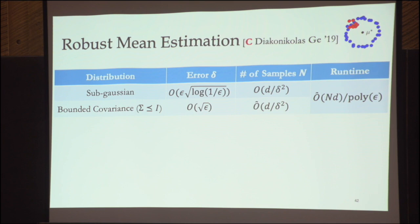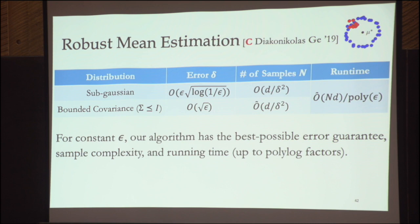Three years ago, people gave polynomial-time algorithms for robust mean estimation with dimension-independent error guarantees. However, all robust algorithms needed to pay at least an additional factor of d in running time to be robust. Our main question: is this factor of d necessary? It's not. Our results work not just for Gaussians but for larger families — sub-Gaussian and bounded-covariance distributions. The error guarantees, sample complexity, and running time are all tight up to constant or polylog factors, and there are matching lower bounds. The message: you can do robust mean estimation without paying additional cost in sample complexity or running time.